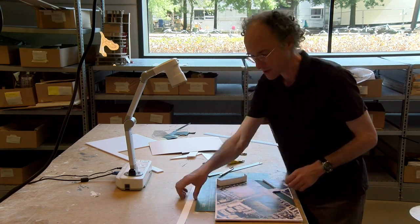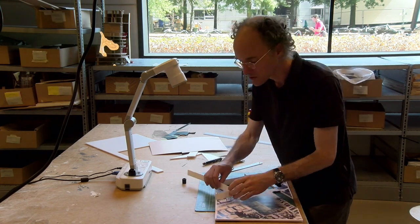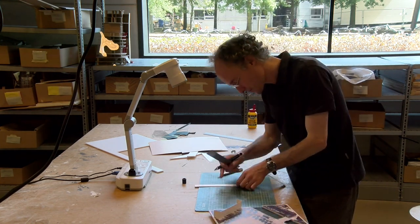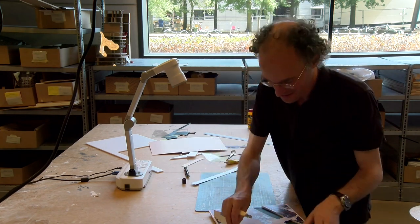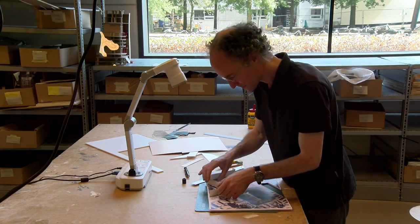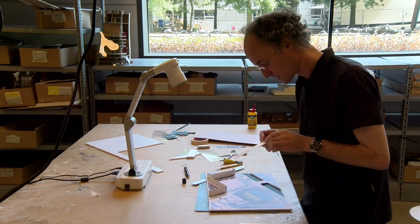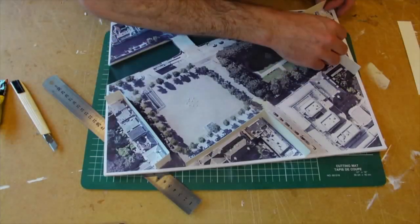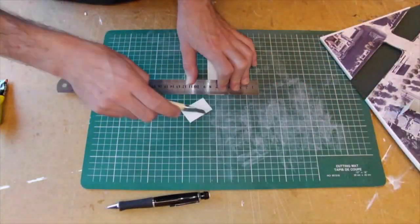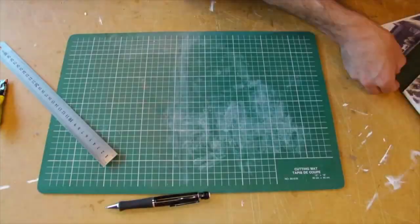You see me using the square division on the cutting mat to cut straight corners and sometimes also to measure. This is a quick way of making things to measure. If you have to cut thick cardboard, do multiple passes with your cutter. Don't try to cut thick cardboard in one go.